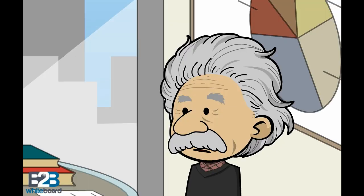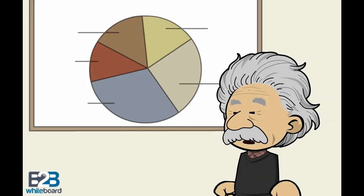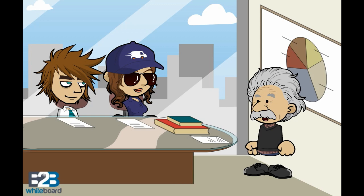Well Debbie, the 8 Disciplines Problem Solving method is used to resolve problems, typically employed by quality engineers or other professionals. Its purpose is to identify, correct, and eliminate recurring problems, and it is useful in product and process improvement. It establishes a permanent corrective action based on statistical analysis of the problem and focuses on the origin of the problem by determining its root causes.